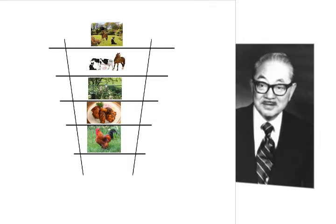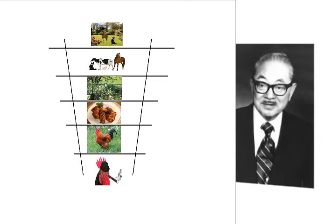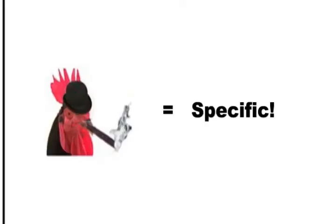Now we have just one more rung to fill. What is more specific than a Rhode Island Red? Simple: Roger, the Rhode Island Red rooster. Roger is the single Rhode Island Red — with his own personality and individuality, Roger is specific.